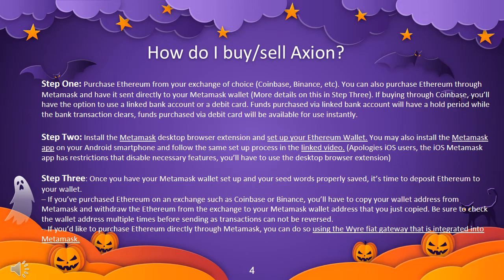Step 1: Purchase Ethereum from your exchange of choice — Coinbase, Binance, etc. You can also purchase Ethereum through Metamask and have it sent directly to your Metamask wallet. If buying through Coinbase, you'll have the option to use a linked bank account or a debit card. Funds via linked bank account will have a hold period, while funds via debit card will be available for use instantly.